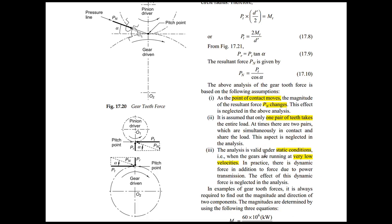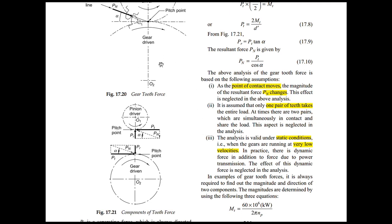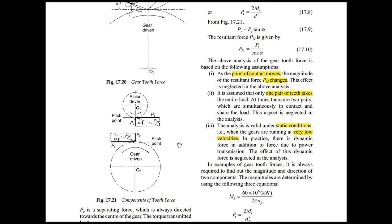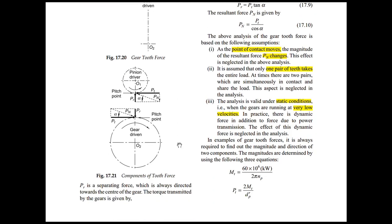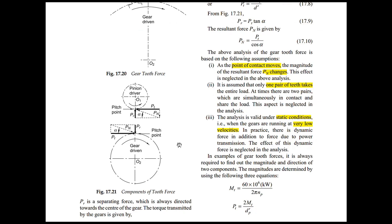This analysis has the following assumptions: at the point of contact, the magnitude of Pn may change, but this effect is not considered. Second, one pair of teeth is in contact at all times, so one pair takes the entire load. Third, this analysis is valid under static conditions when gears are running at very low speeds. Thanks for listening.